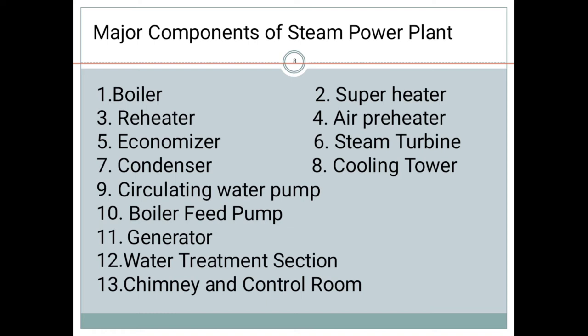Condenser is used to convert the vapor into the liquid. Turbine is used to convert the kinetic energy into the mechanical energy. Cooling tower is helpful for circulating the cooling water. And boiler feed pump always supplies the water to the boiler. These are the major components in the steam power plant.